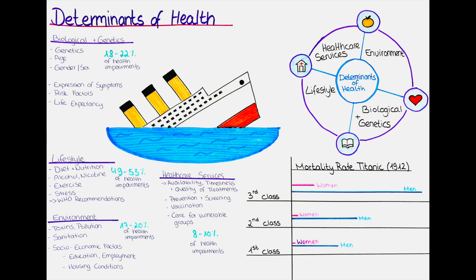A more recent example is the life expectancy by social class and gender in the UK, from a study conducted between 2002 and 2005. Women of the highest social class had an average life expectancy of 85 years, while women of the lowest social class had a life expectancy of 80 years. Men of the highest social class had a life expectancy of 80 years, while men of the lowest social class had a life expectancy of 73 years. This shows the importance of promoting social equity and equal treatment of all patients, regardless of social status.